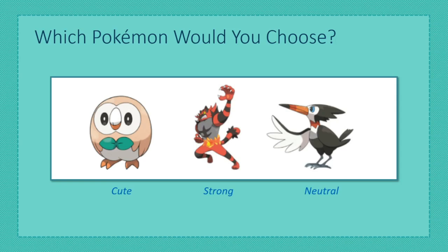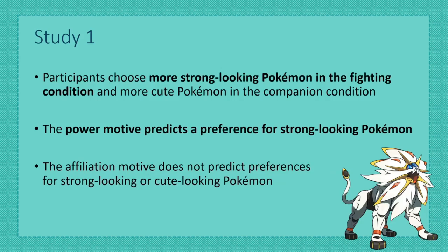I will walk you through our most important results. We found that context mattered, as generally participants chose stronger-looking Pokémon for a fight and cuter Pokémon as their companions. However, even when controlling for context, the power motive significantly predicted a preference for strong-looking and a disregard for cute Pokémon. The affiliation motive did not predict either of these results.